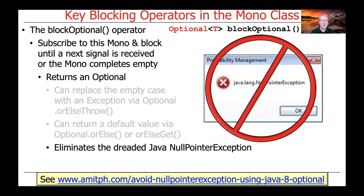Why do we do this? The main goal of Optional is to eliminate the need to handle the dreaded Java NullPointerException, which is the bane of many Java programs, because we often forget that null can come back from calls. We then forget to check for null, make method calls on nulls, the program crashes, and exceptions are thrown. By using Optional correctly, you no longer have to deal with null pointer exceptions.